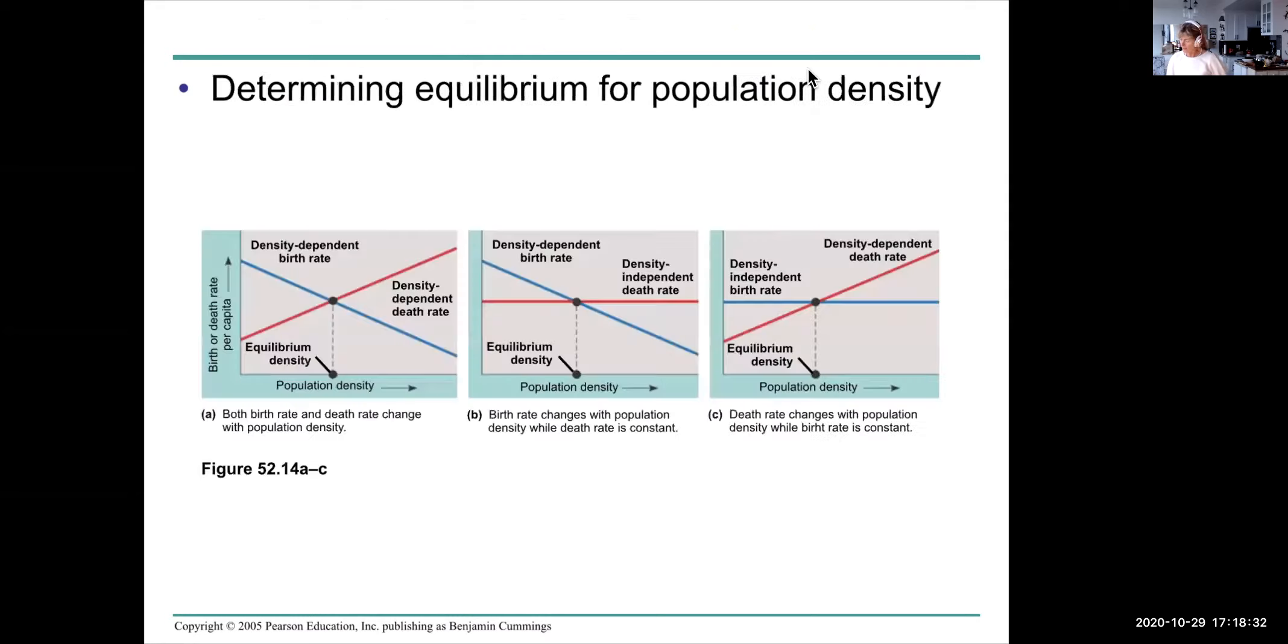So we sometimes can find an equilibrium for population density. In this case this is the birth rate or death rate per capita and at this population density the birth rate and death rates are the same. This is what you would expect the density to be for a stable population size over time. Sometimes the death rate is constant. In this case the death rate is constant. What changes with density is the birth rate.